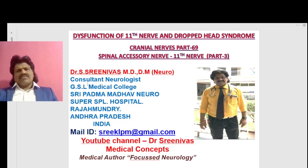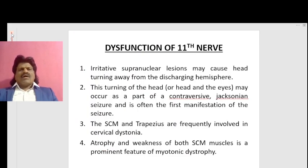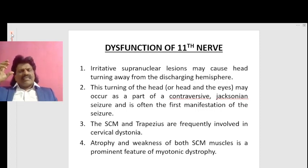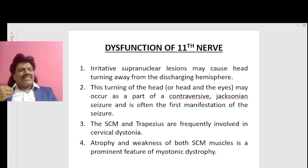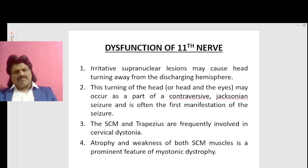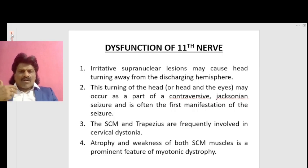Dysfunction of the 11th nerve and dropped head syndrome. Irritative supranuclear lesions may cause the head to turn away from the discharging hemisphere. When there is frontal cortex irritation, it supplies the sternocleidomastoid muscle on the same side, causing its contraction and turning the head to the opposite side. This turning of the head and eyes may occur as part of a contralateral Jacksonian seizure and is often the first manifestation of the seizure.